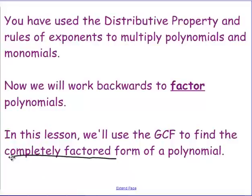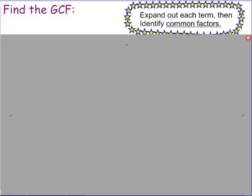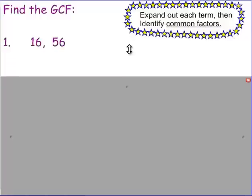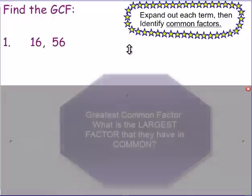We just need to double check that we're okay with the greatest common factor. Remember, it's the biggest thing that can be divided into everything — the biggest thing that we can take out. Let me show you what I mean. We're going to expand out some of these terms and find common factors. We basically want to find the greatest common factor, the biggest thing that we can take out.